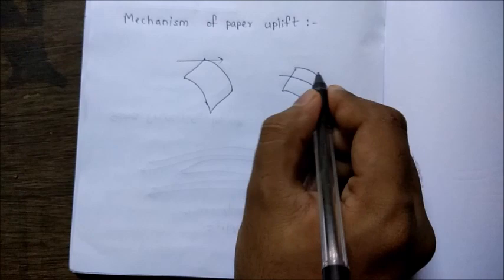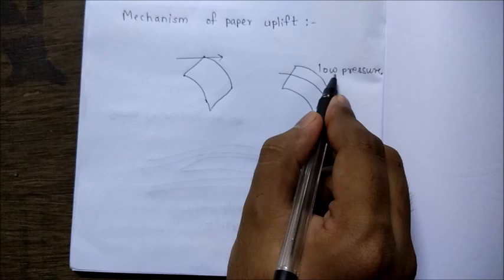This is a low pressure region and this is a high pressure region. So the air molecules over here push the paper upwards. So the paper gets uplift.